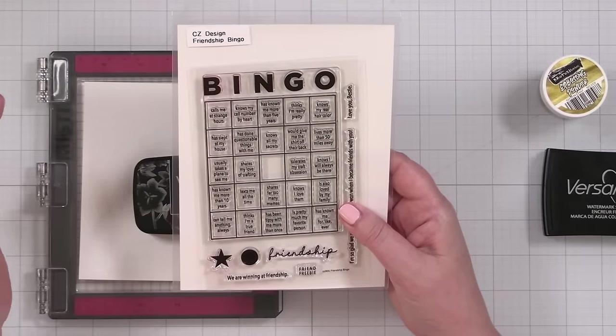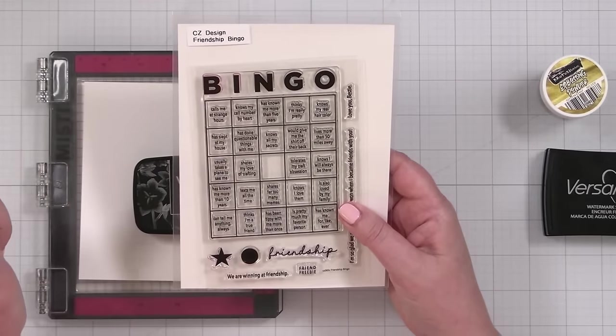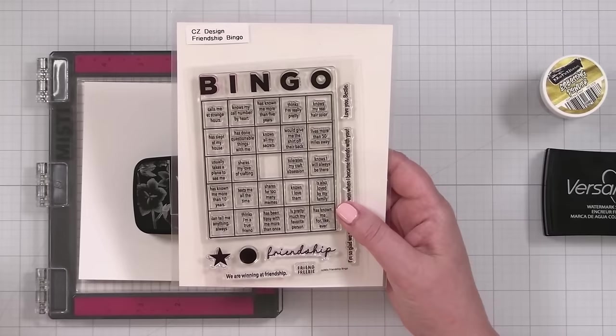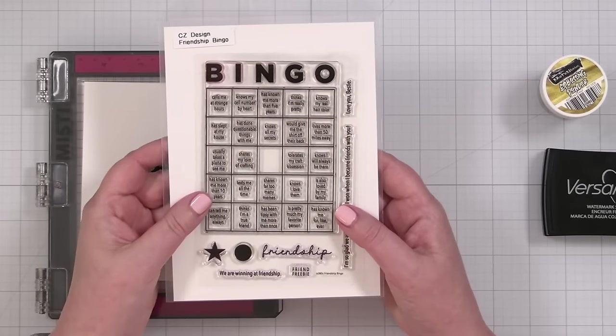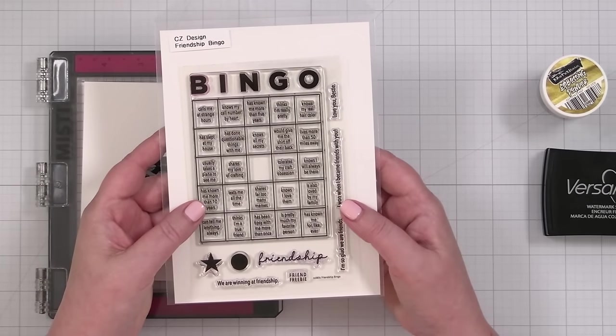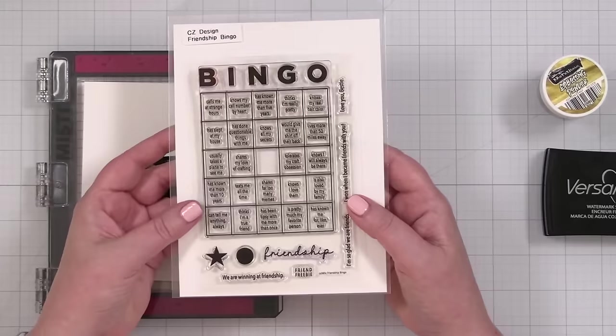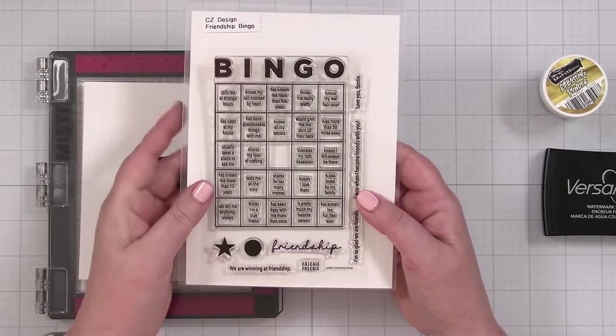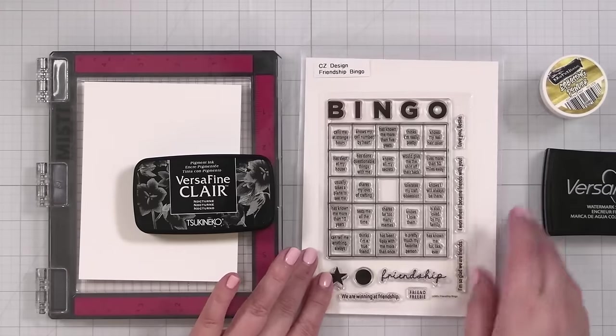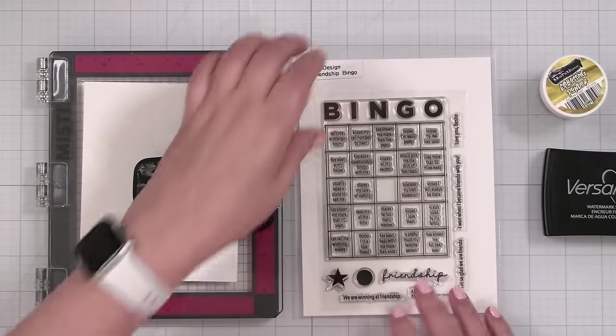Things like calls me at strange hours, has done questionable things with me, would give me the shirt off their back, lives more than 50 miles away, knows my real hair color. This is a card for your true friends. And the whole idea is to create a cute little bingo card. And this will fit nicely onto a card panel for the card. So that's the stamp set behind this.